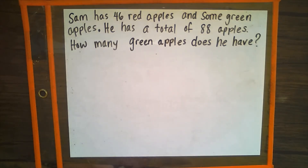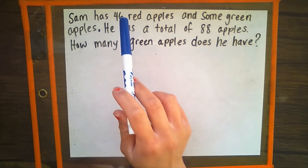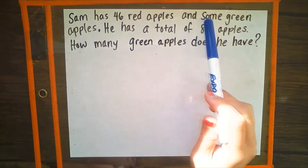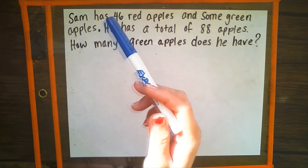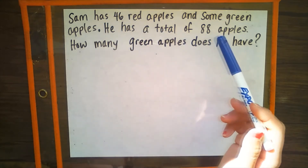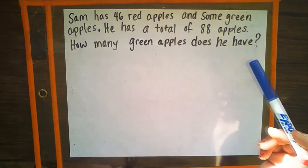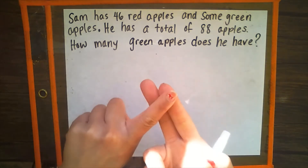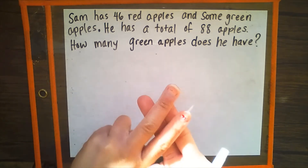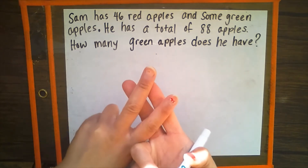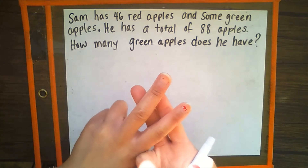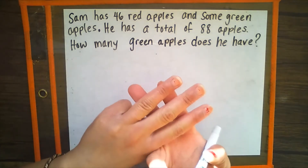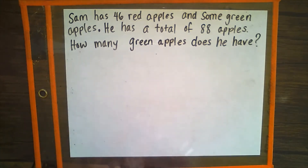My friends, welcome to the next part of the teacher model. We have a new word problem now. Read with me or in your head as I read out loud to you. Sam has 46 red apples and some green apples. He has a total of 88 apples. How many green apples does he have? Great mathematicians, we've got to go back and reread that word problem, circle all the important numbers and pay attention to the operation words, and then lastly underline our question. So let's go ahead and do that.